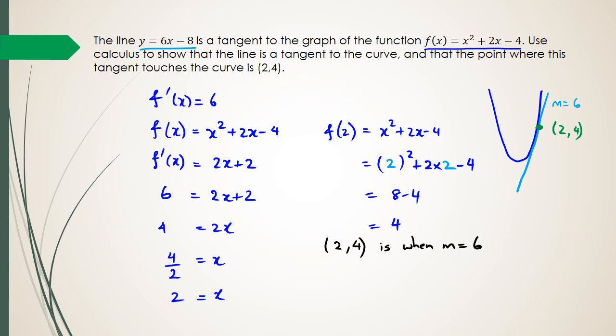And then now I can actually prove that this is the tangent equation. So if I find the tangent equation of the tangent, it should equal y equals 6x minus 8. So the equation of a straight line is y minus y1 equals m times x minus x1.